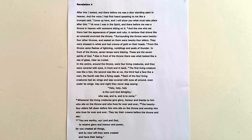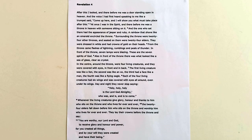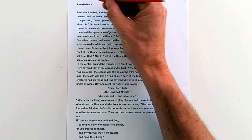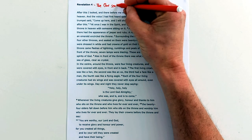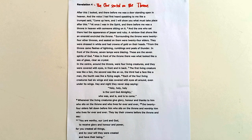Revelation 4 starts the next big unit in the book of Revelation. Chapters 1, 2, and 3 were the opening unit, and here we begin a big unit all the way up to chapter 17, where another unit begins. The sermon I preached on this section I called 'The One Seated on the Throne.' If you've taken time to read the chapter already, that will become very clear — all the focus is on the throne and the one sitting on the throne.